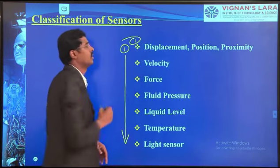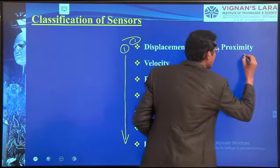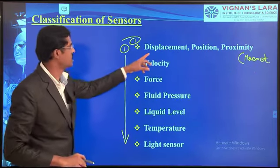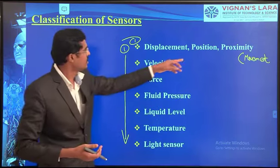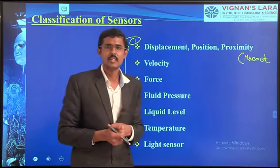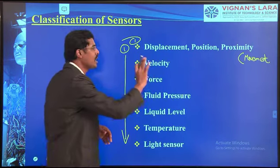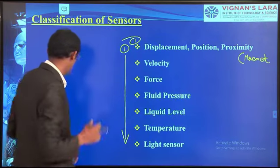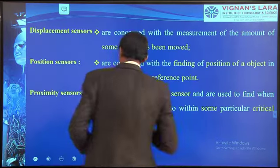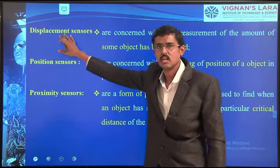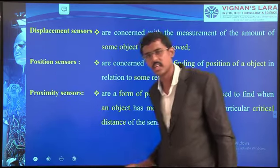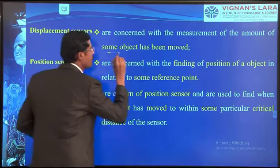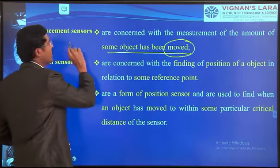Starting with displacement, position, and proximity — these can basically be written as movement. Displacement is a change of position, a change of level, a change of one critical position. Velocity is also a change of movement but related to speed. I have given a definition: displacement sensors, position sensors, and proximity sensors — all three are interrelated and concerned with the measurement of how much some object has been moved.